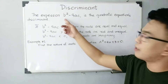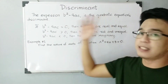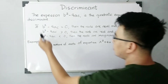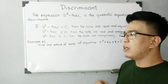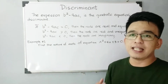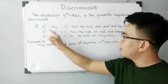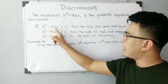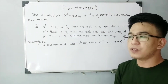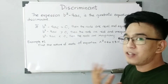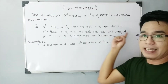The expression b squared minus 4ac is the quadratic equation's discriminant. We have three conditions to say what the nature of roots of a quadratic equation is. First, if your discriminant is equal to zero — if b squared minus 4ac equals zero — we can say that the roots of the variable in a given quadratic equation are real and equal.